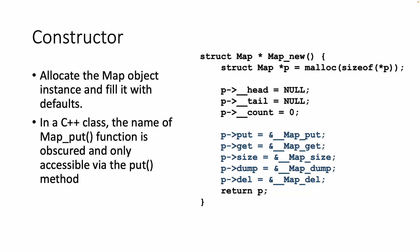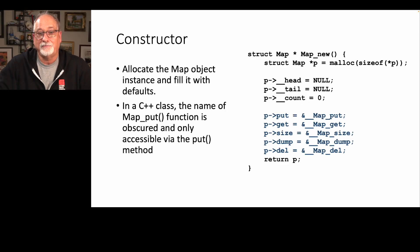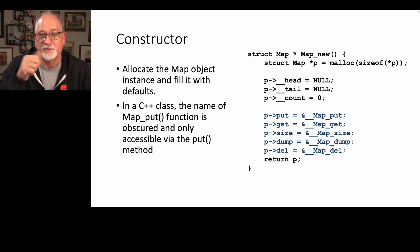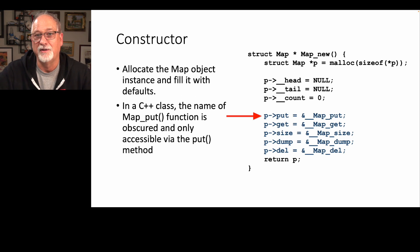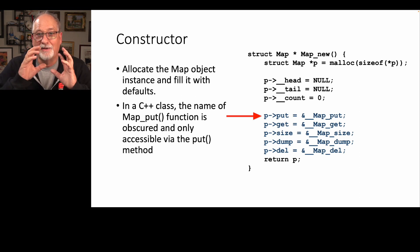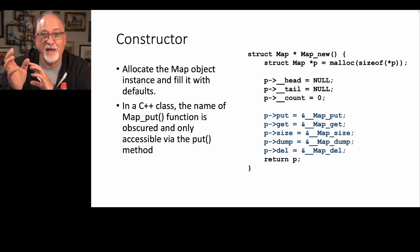The constructor is pretty straightforward — not that different from the constructor you already did. We build functions like double underscore map put, double underscore map get, map size — they're defined above us in the source code. Then we say p arrow put, which is the public attribute put, equals ampersand — the address of the double underscore map put function. Ampersand is address-of. Get is the address of that function, size is the address of that function, dump is the address of that function, and we're done.